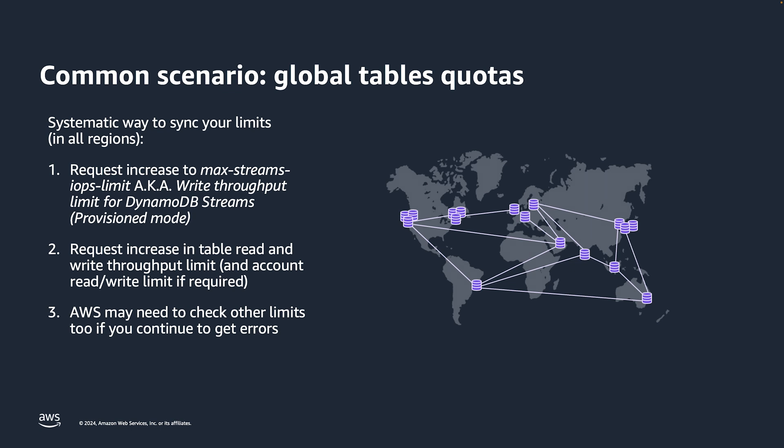Don't forget to adjust your read capacity too so it matches in all regions. Whether you have an on-demand capacity table or use provisioned mode, you don't want to worry later on if your global table will scale for reads in all your regions. Make the table read capacity limits the same in all regions by including those in your request to update the write capacity. Even if you follow all of this guidance, it is still possible you may hit another error if your table is very large in terms of number of partitions or terabytes. AWS support should identify the issue while processing your service quota increase request, but you may need to return and request further changes based on the exception message received. We recommend you work closely with your AWS account team when it comes time to add a new region to your global table.